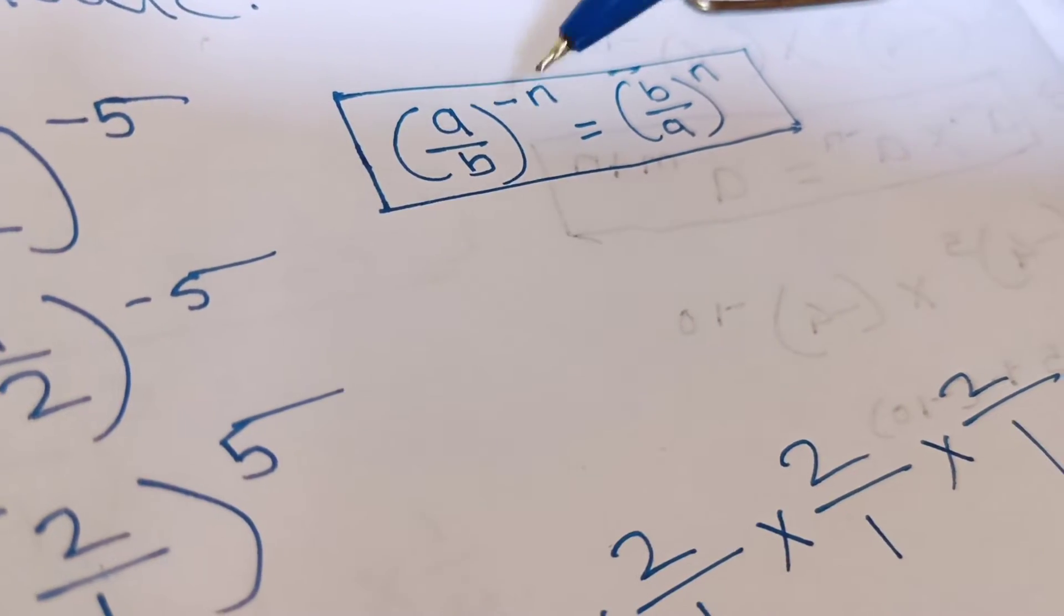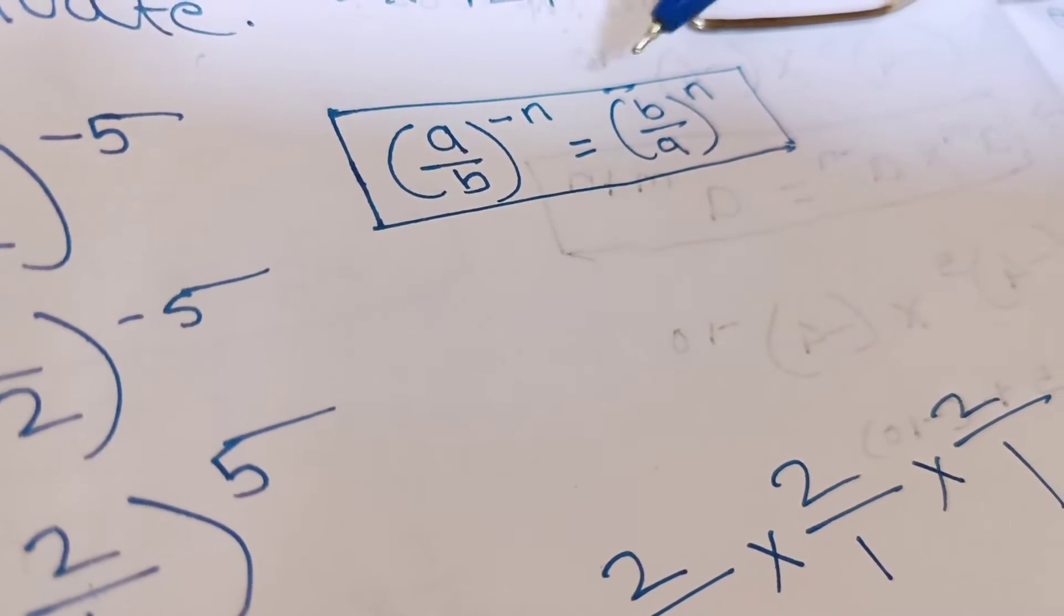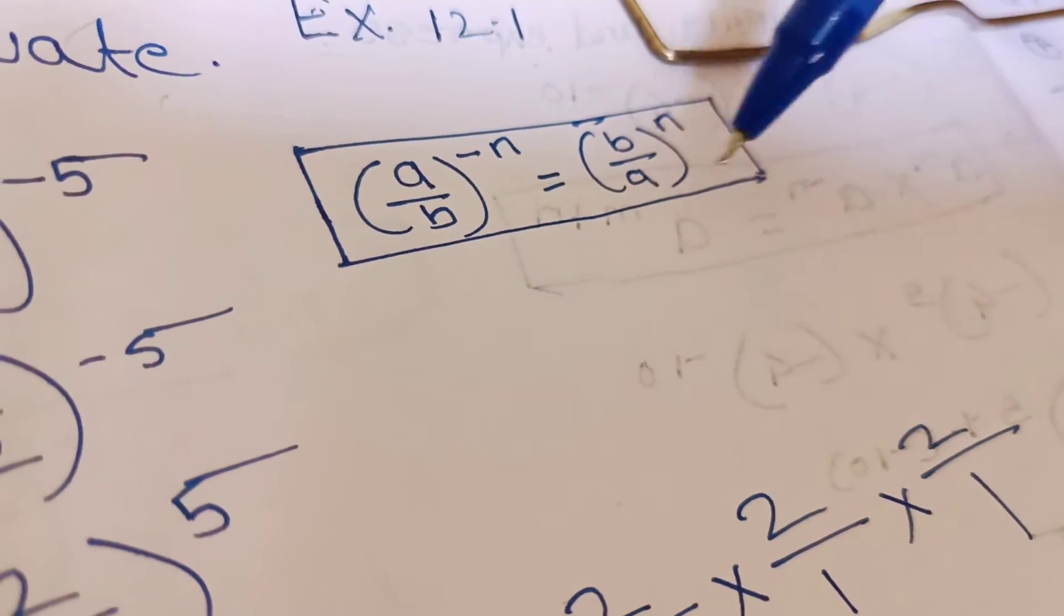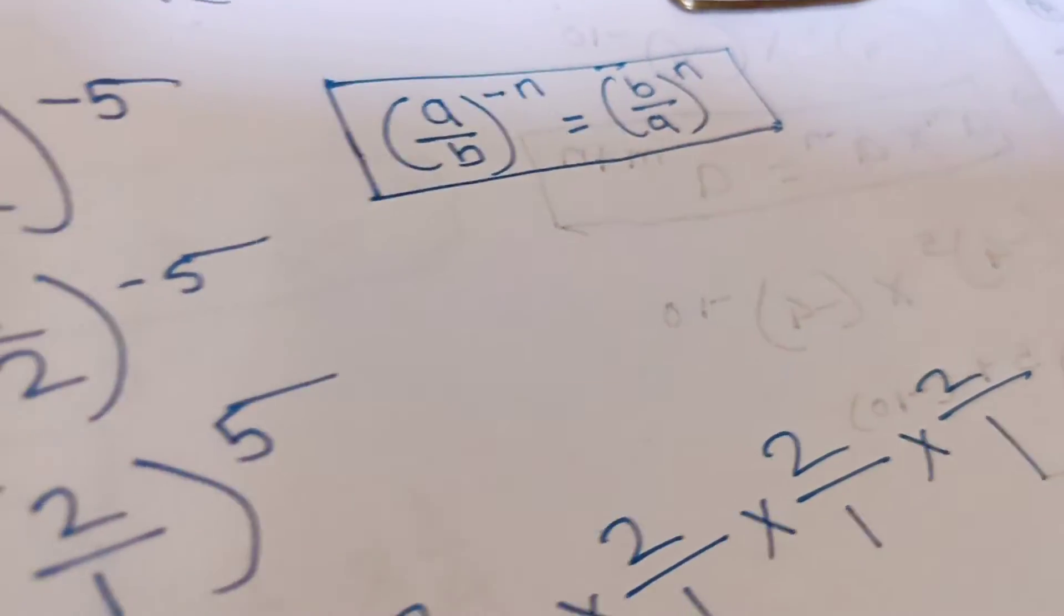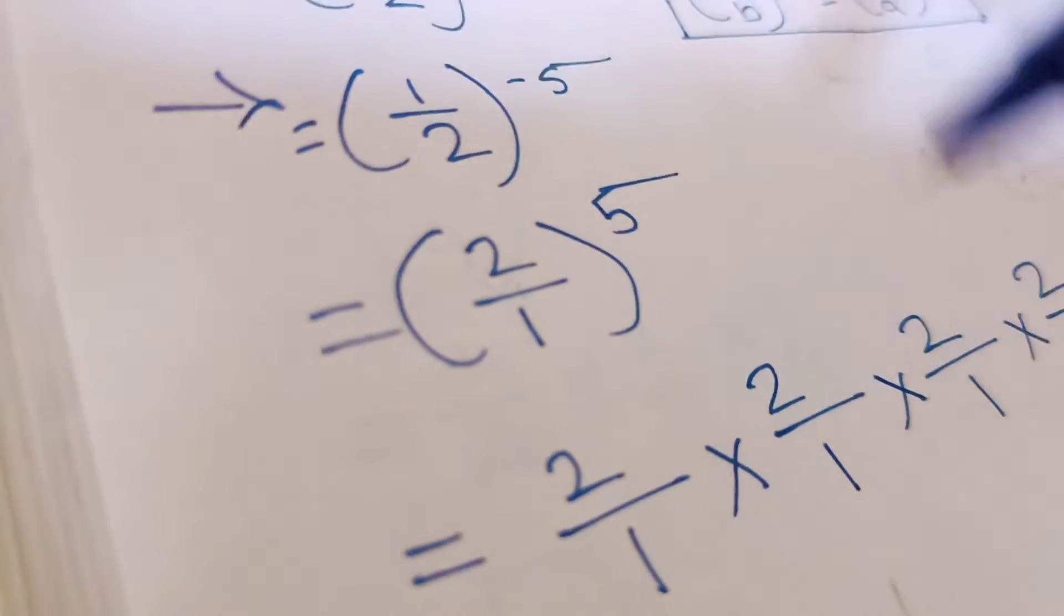So bracket a upon b minus n equal to b upon a bracket complete n. So we have to use this identity to solve this question.